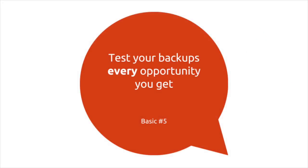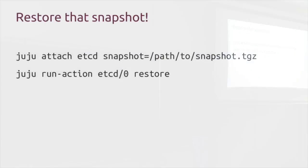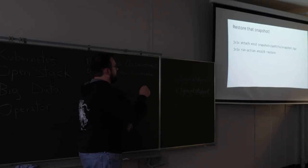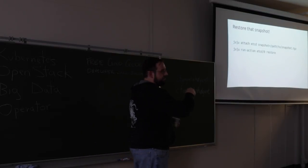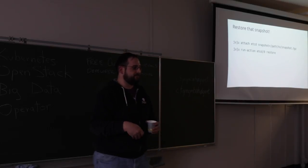Since we're talking about backups, the next logical step is to start testing those backups every opportunity you get, because you want the faith that what you have is a full consistent backup. We've encapsulated this in Juju — you take the same tarball from the backup action and attach it to the charm as a resource, which just uploads the tarball and takes no action on initial upload. You then manually invoke the restore, which will stop all services, unpack the backup, and stand the service back up.